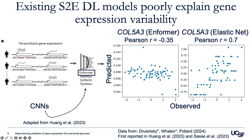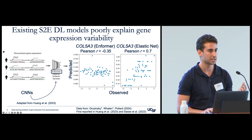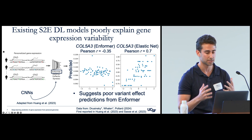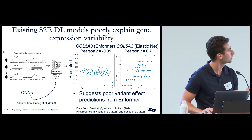This is not because there aren't genetic variants around the gene that are important for its expression. Using an elastic net - a linear model very similar to PrediXcan that predicts gene expression from genotype - we can find genetic variants and accurately predict who should have relatively higher or lower expression for this gene, even while Informer cannot. So Informer is basically underperforming expectations, and it isn't doing a good job figuring out which variants in people's DNA contribute to gene expression changes.